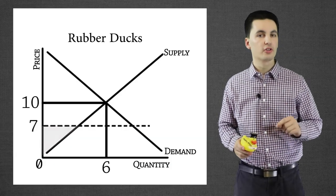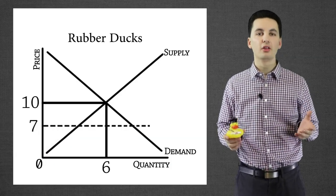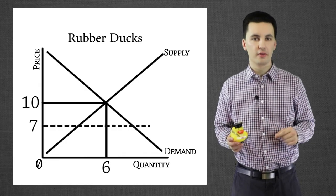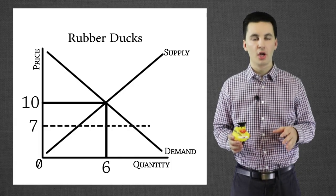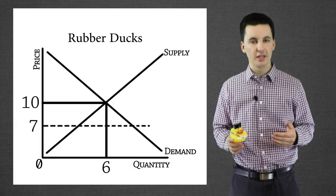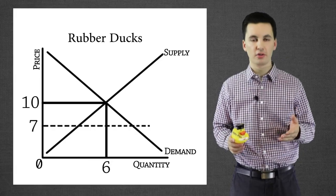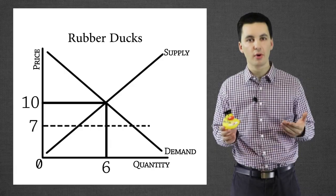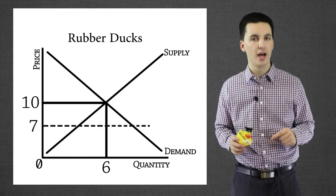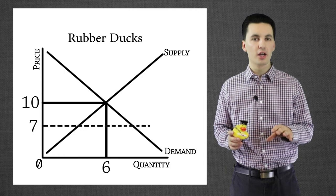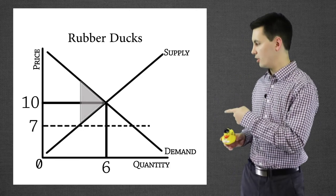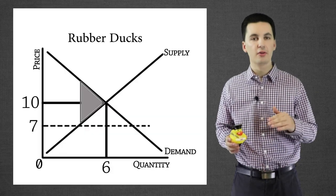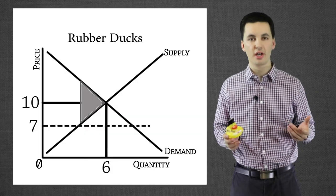Now the question is: where is our deadweight loss? Deadweight loss is lost efficiency — whenever we manipulate the market, we're going to have a loss of efficiency, and that's going to be our deadweight loss. While it might seem like a good idea to lower prices artificially through government regulation, what's going to happen is we'll have a shortage; we're not going to have enough rubber ducks for everyone, so people actually lose out. Our deadweight loss is represented by this area here — the lost efficiency, the lost area that we could have had if the market had not been manipulated by the government.